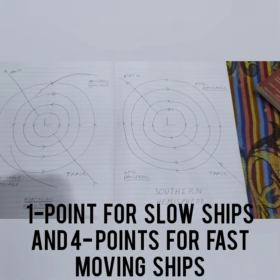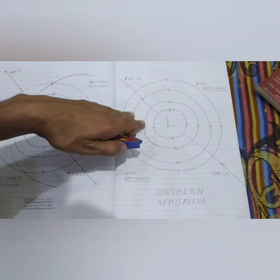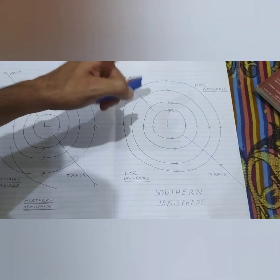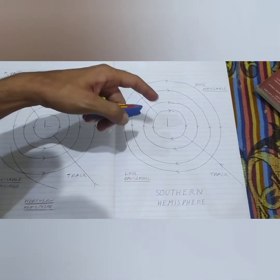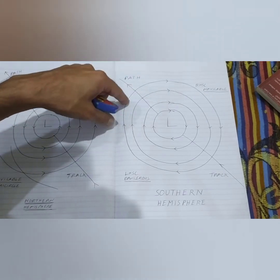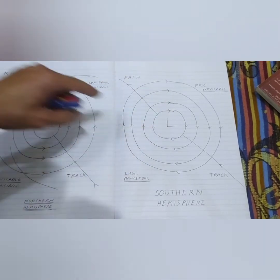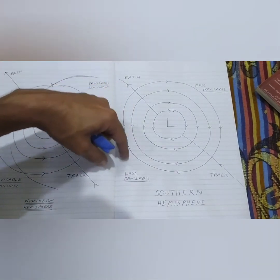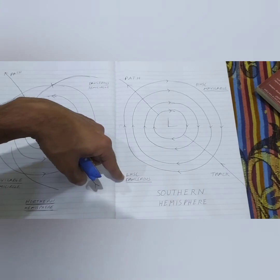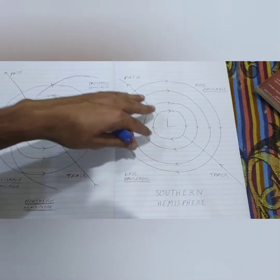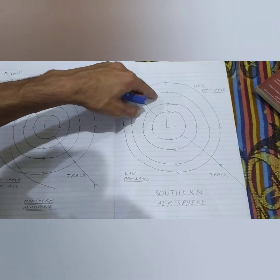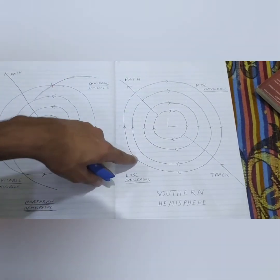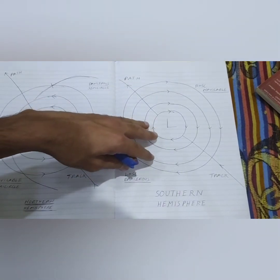Now for comparison, in the southern hemisphere the TRS rotates clockwise. It also has a right-hand semicircle and a left-hand semicircle. The only difference is that in the southern hemisphere the right-hand semicircle is navigable, while the left-hand semicircle is dangerous — the opposite of the northern hemisphere. The wind still veers in the right-hand semicircle and backs in the left-hand semicircle, even in the southern hemisphere.